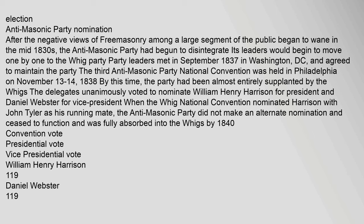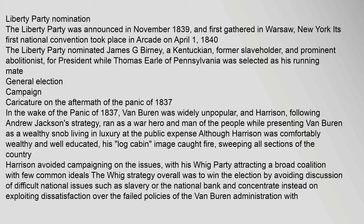Convention vote: William Henry Harrison 119, Daniel Webster 119. Liberty Party nomination: The Liberty Party was announced in November 1839 and first gathered in Warsaw, New York. Its first national convention took place in Arcade on April 1, 1840. The Liberty Party nominated James G. Birney, a Kentuckian, former slaveholder, and prominent abolitionist, for president, while Thomas Earl of Pennsylvania was selected as his running mate.